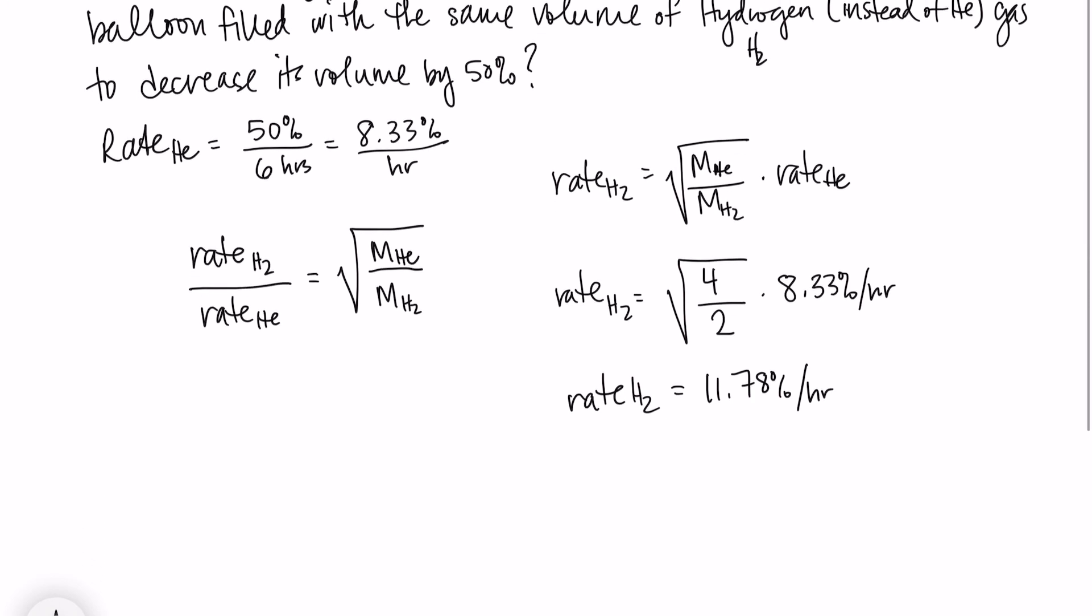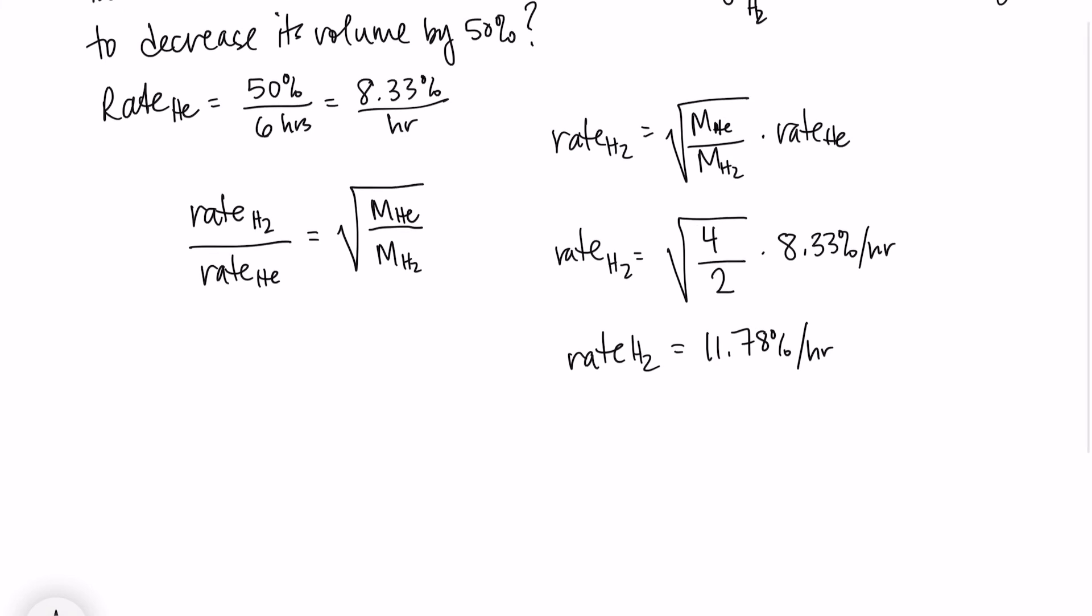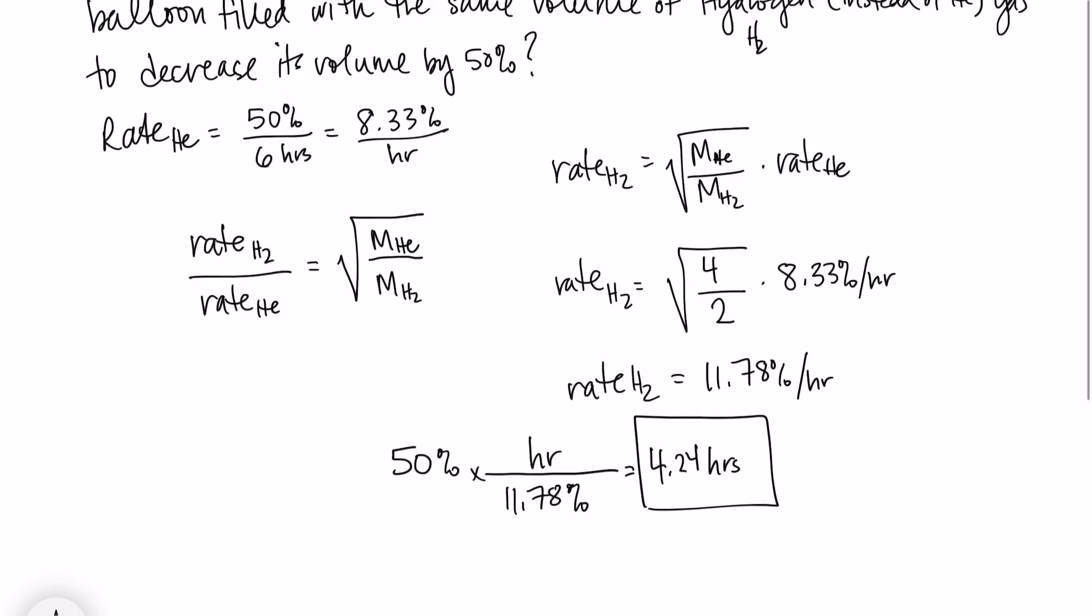In any case, we want to know the time. So they told us it's going to decrease its volume by 50%. And if we have 50% and our rate is 11.78% per hour, then we should come up with 4.24 hours. And that will be the time that it takes for that balloon to deflate to 50% if it's hydrogen instead of helium.